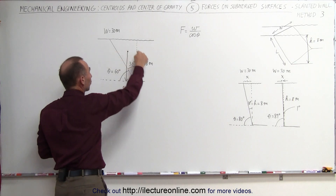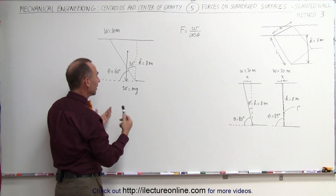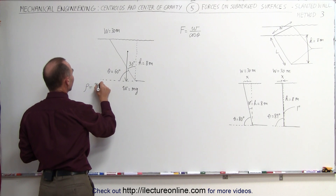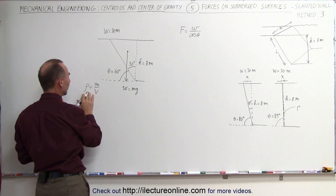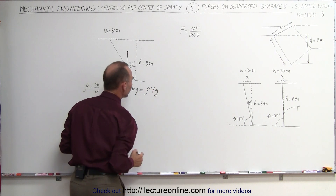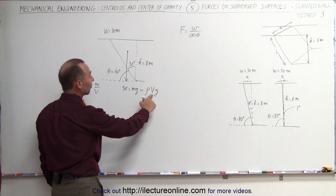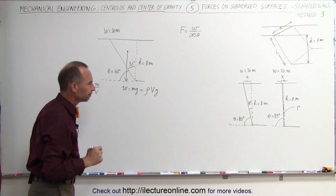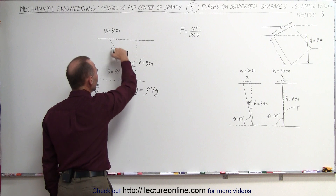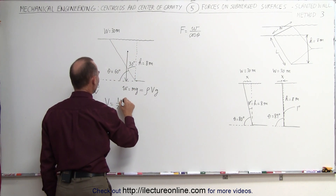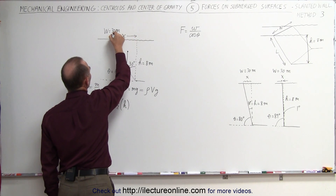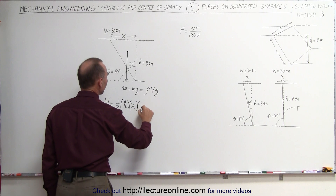We need to find the weight of this triangular wedge portion. The weight equals mass times gravity, and since the density of a fluid equals mass divided by volume, we can write mass as density times volume. So the weight equals the density of the fluid times the volume times g. The volume equals one-half times the height times the width x of the base.